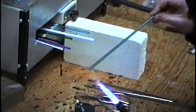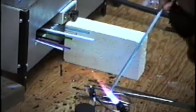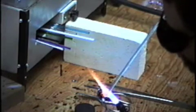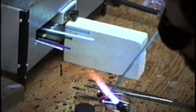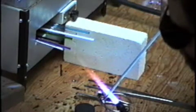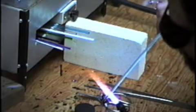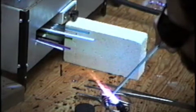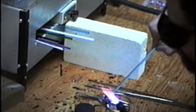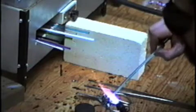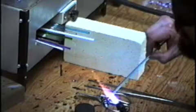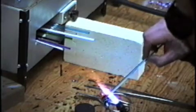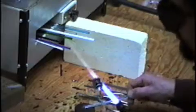Now I'm going to take this filigrana or filigree rod that has a clear rod with a colored core and I'm going to twist it onto the bead. It probably won't show up very well in the video, but what I'm trying to demonstrate here is the use of the kiln. I'm not trying to demonstrate how to make a bead.